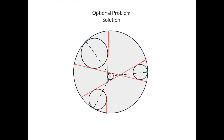Similarly, by Monge's theorem, this line must pass through the internal center of homothety of this circle and this circle, because this here is the internal center of homothety of this circle and this circle, and this here is the external center of homothety of this circle and this circle. Hence, this is the Monge line for this circle, this circle, and this circle, meaning that this line passes through the internal center of homothety of this circle and this circle. Similarly, this line also passes through the internal center of homothety of this circle and this circle. Hence the three dashed lines all intersect at the internal center of homothety of this circle and this circle.